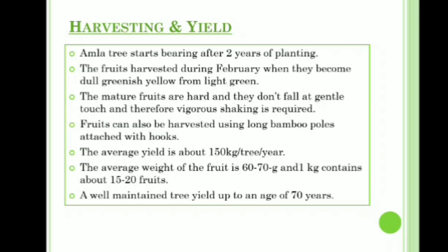Harvesting and yield: Amla tree starts bearing after two years of planting. Fruits are harvested during February when they become dull greenish yellow from light green. Mature fruits are hard and don't fall at gentle touch, so vigorous shaking is required. Fruits can also be harvested using long bamboo poles attached with hooks. The average yield is about 150 kg per tree per year; average fruit weight is 60 to 70 grams, and one kg contains about 15 to 20 fruits. A well-maintained tree yields up to an age of 70 years.